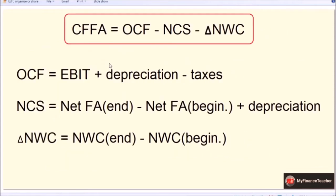Operating cash flow is the amount of money generated from regular operating activities. We start with earnings before interest and tax, EBIT — the earnings the company makes by simply running the factory. The EBIT calculation includes non-real out-of-pocket costs like depreciation, so we add back depreciation to cancel it out. After subtracting taxes, we get operating cash flow.